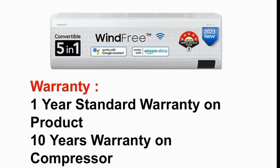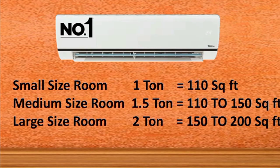Let's check the warranty. If you buy this AC, you get a 1-year product warranty and a 10-year compressor warranty. For room size: a small room is 110 square feet — buy a 1-ton AC; a medium room is 150 square feet — buy a 1.5-ton AC; a large room is 200 square feet — buy a 2-ton AC.